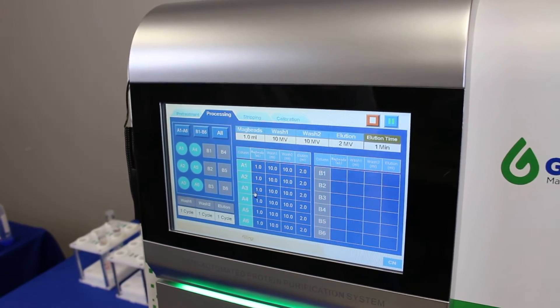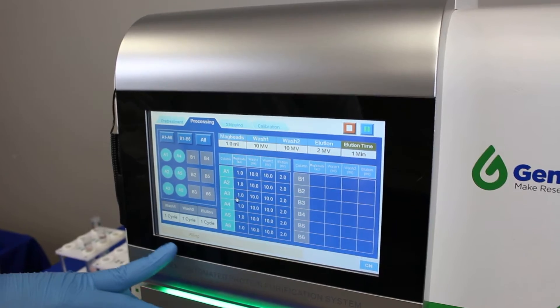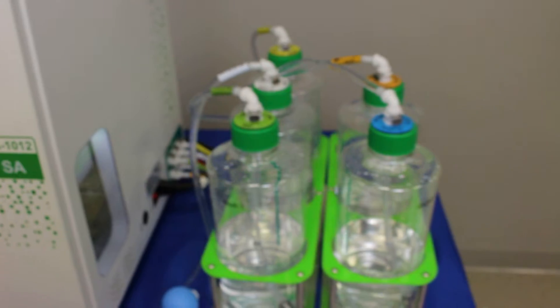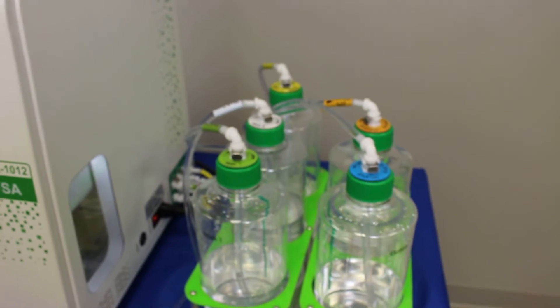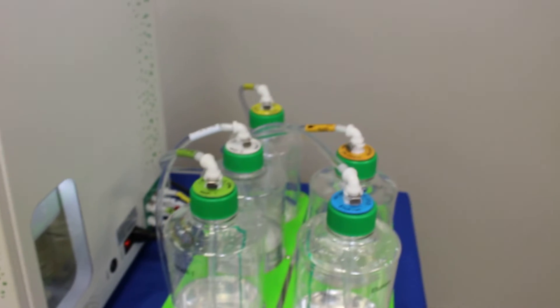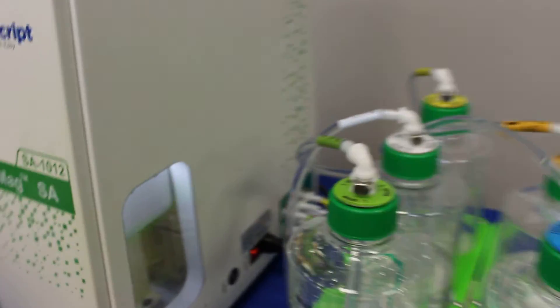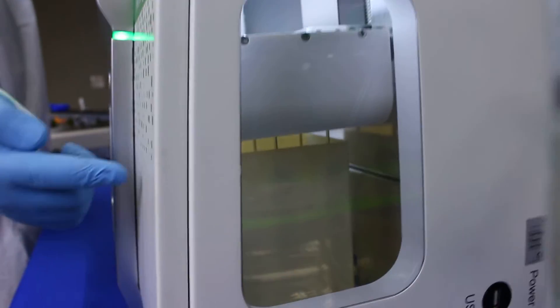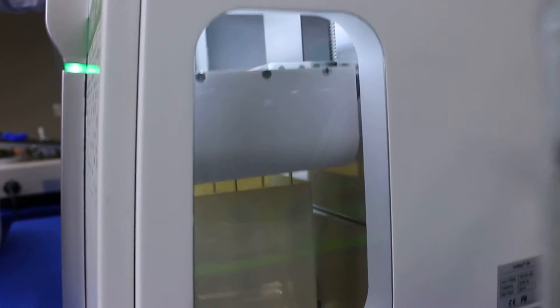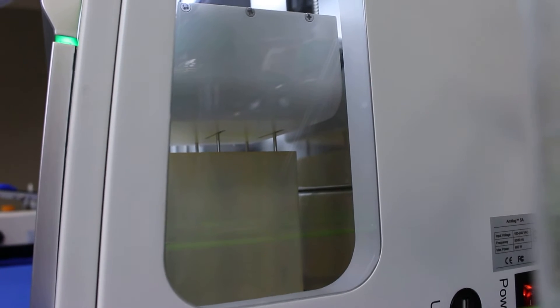Once you start the system you see that it's saying 'filling' - that means it's just taking up all the buffers from the bottle and filling the tubing with the different buffers. It's also washing your wash station which is located right here. You can see that it has nozzles and a wash station. Your nozzles are being washed at this time.